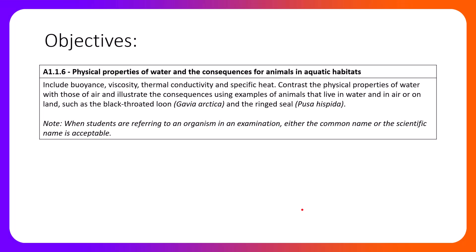Hey guys, Mr. P here. In this video we're going to talk about the physical properties of water, specifically IB understanding 116, which states physical properties of water and the consequences for animals in aquatic habitats. We're going to include buoyancy, viscosity, thermal conductivity, and specific heat within our discussion. We're going to contrast the physical properties of water with those of air and illustrate the consequences using examples of animals that live in water and air, such as the black-throated loon.